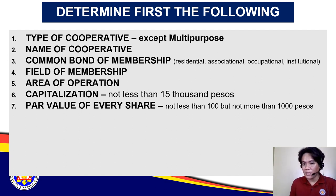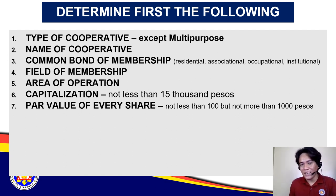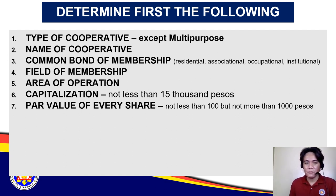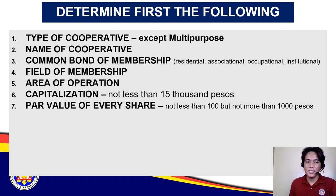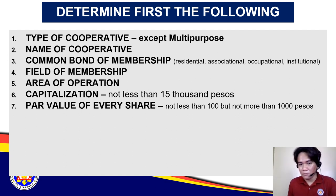Most applications processed use par values of 100, 250, 500, or 1,000 pesos as round figures. For example, with a par value of 1,000 pesos, 15 members attending the pre-registration seminar can reach the required capitalization of 15,000 pesos.